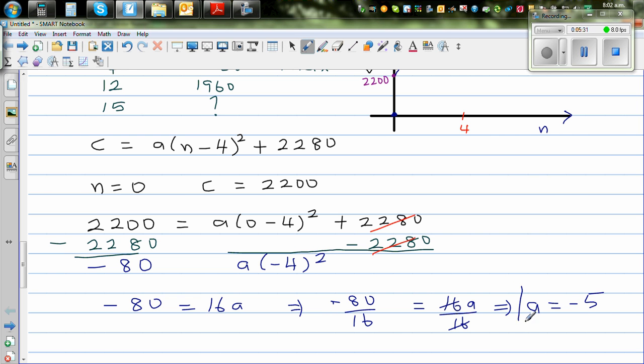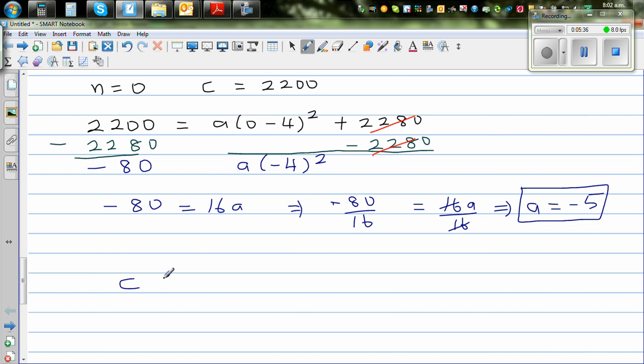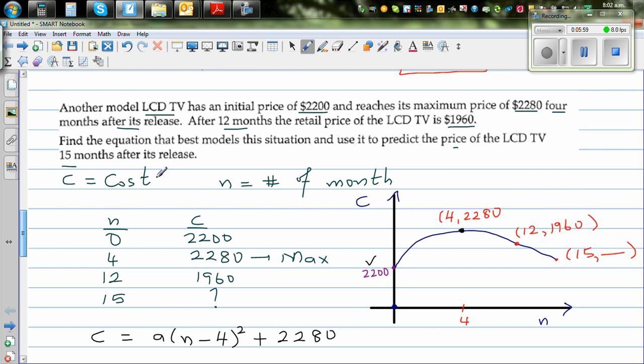So the equation is C is equal to minus 5 times N minus 4 the whole squared plus 2,280. So now what we're going to do is the equation is what's the price after 15 months? After 15 months, what's the price?